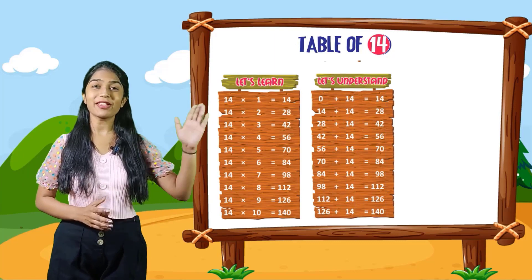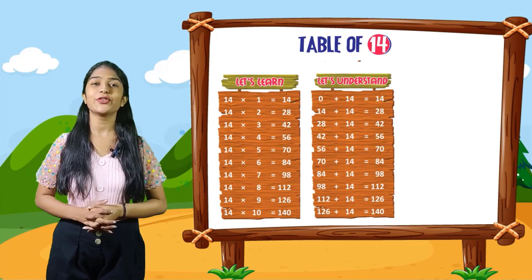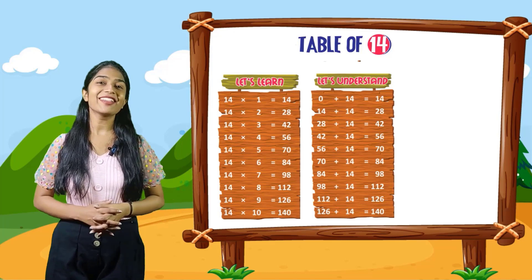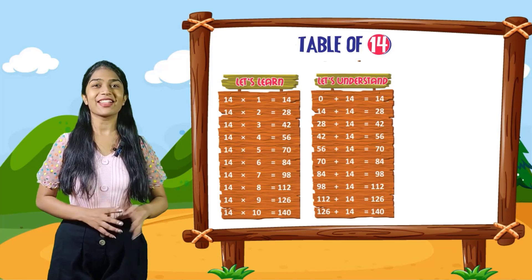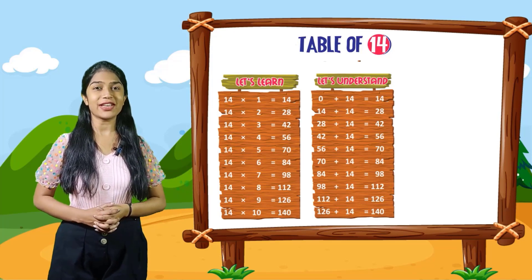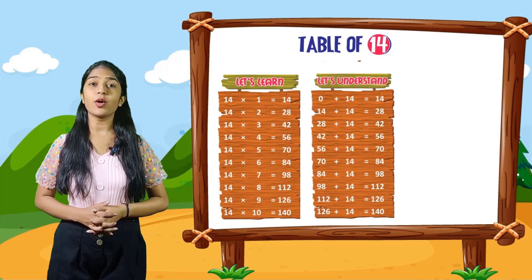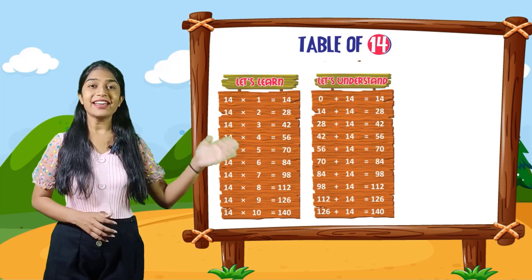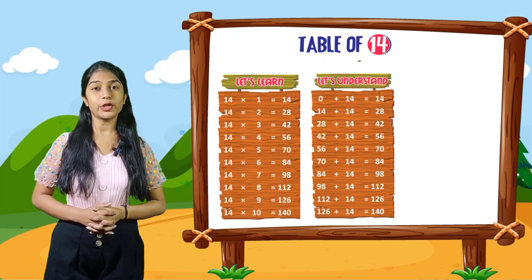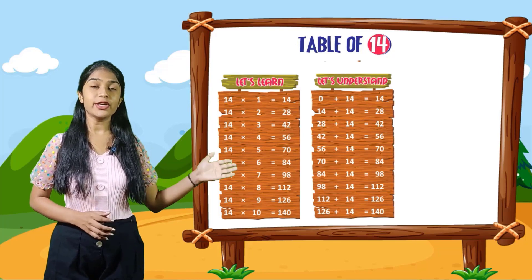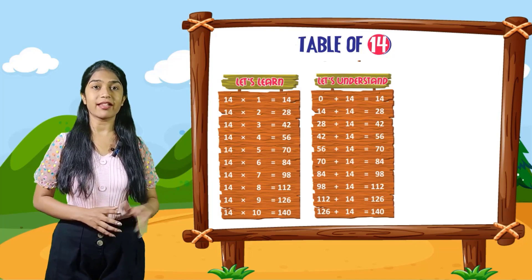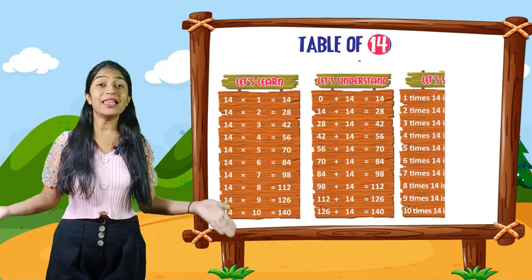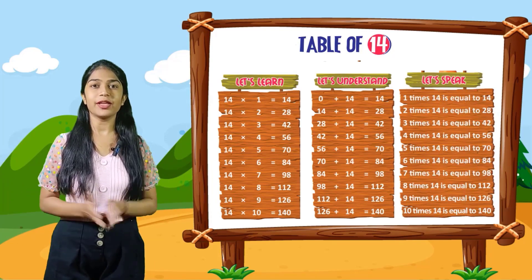So now let's understand. 0 plus 14 is equal to 14. 14 plus 14 is equal to 28. 28 plus 14 is equal to 42. 42 plus 14 is equal to 56. 56 plus 14 is equal to 70. 70 plus 14 is equal to 84. 84 plus 14 is equal to 98. 98 plus 14 is equal to 112. 112 plus 14 is equal to 126. 126 plus 14 is equal to 140.